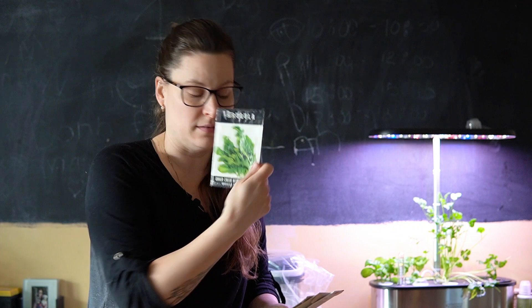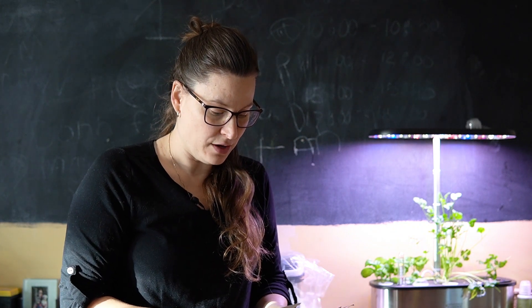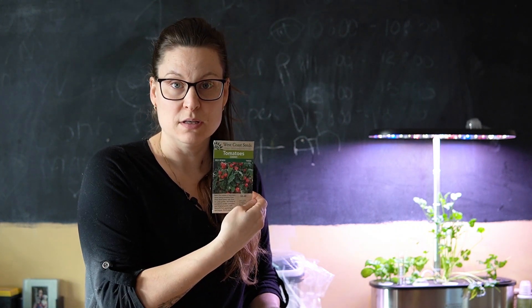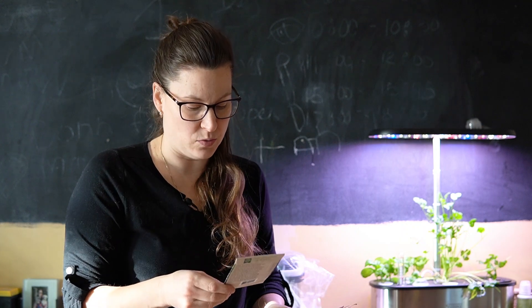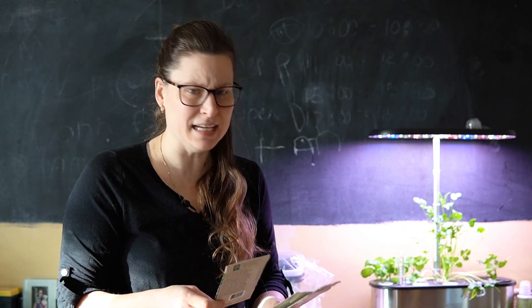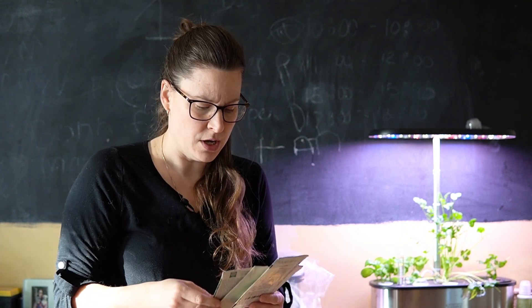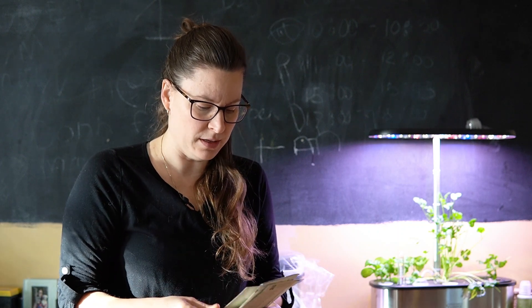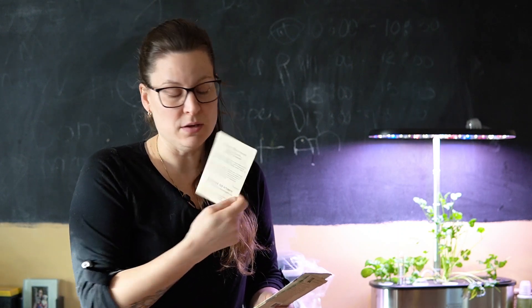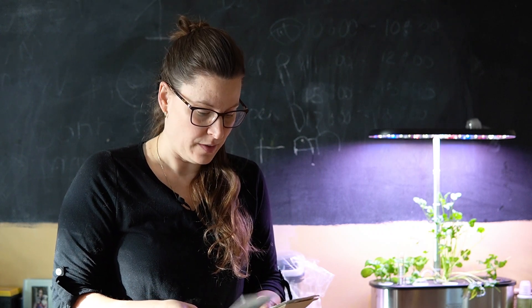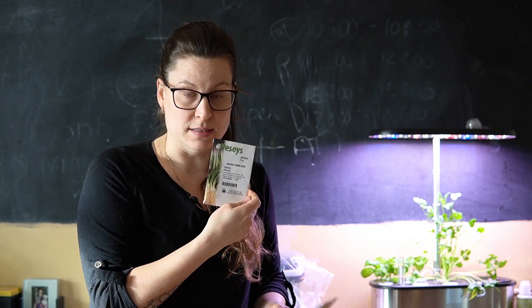Arugula is one of them. I have Red Robin cherry tomatoes. These are supposed to be micro dwarf, like 20 centimeters. I think I have Tiny Tim. Tiny Tim is a bit lower. So I might do Tiny Tim and Red Robin. Yellow Canary, which is a dwarf yellow, and green onions.